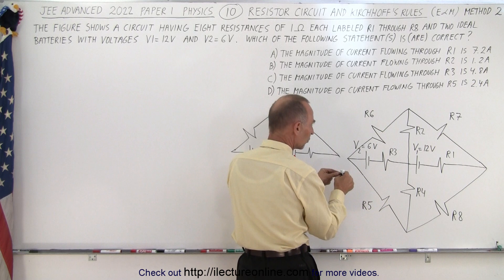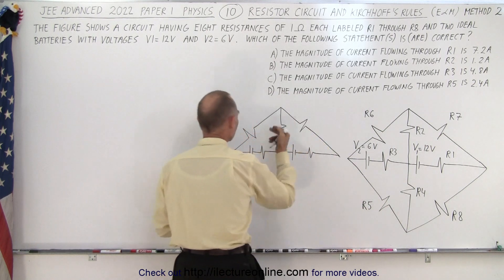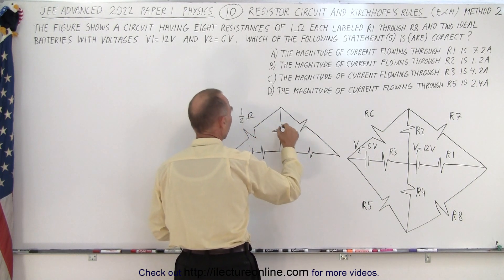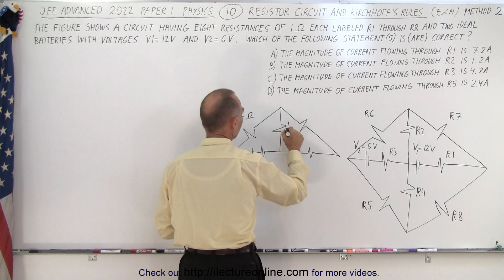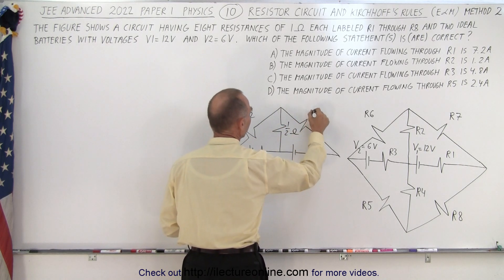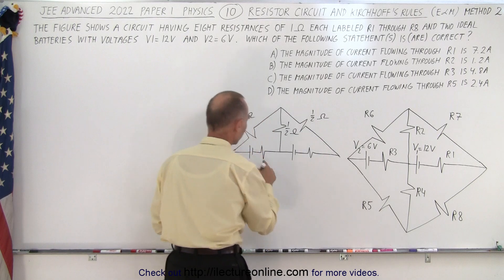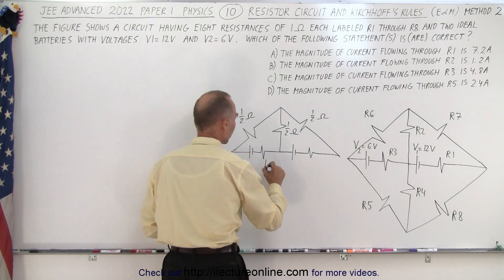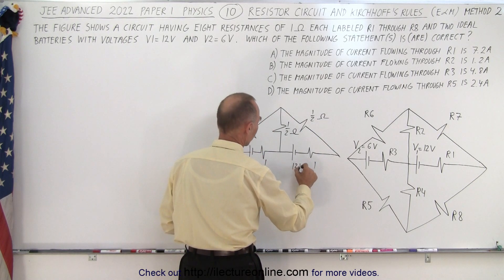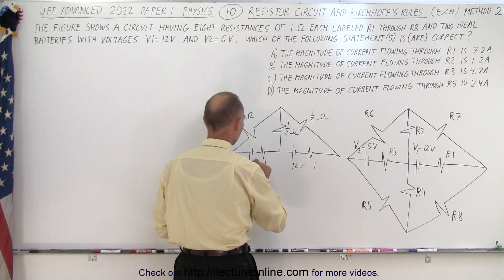Since we folded two parallel branches into one branch, the resistance in each of these folded branches is a half ohm — so half ohm, half ohm, and half ohm instead of a full ohm. The battery branches remain 1 ohm each, with 12 volts and 6 volts unchanged.